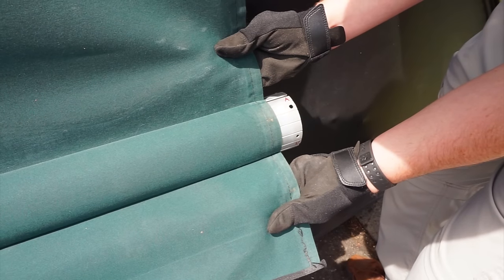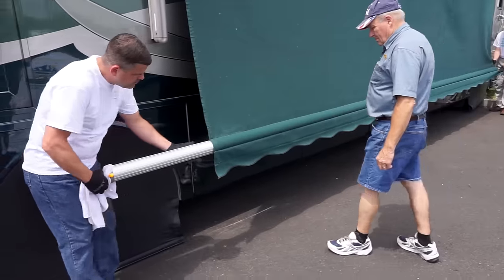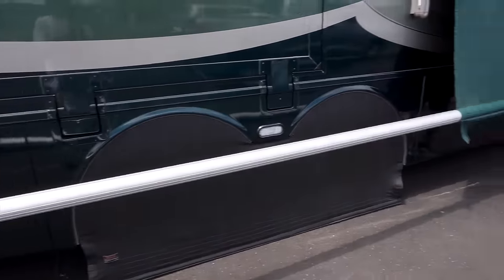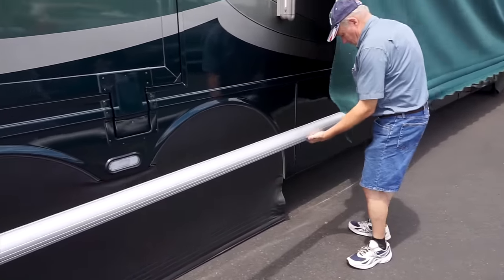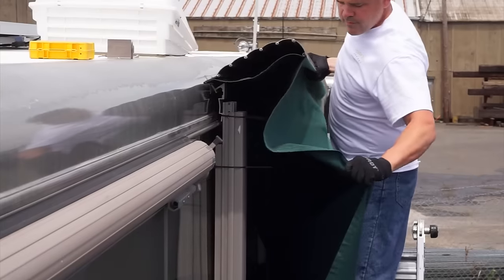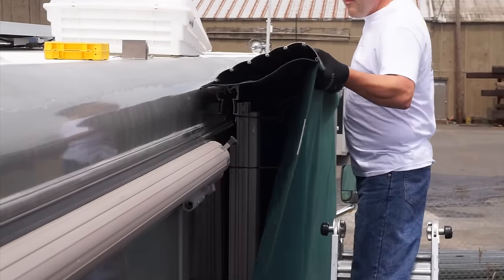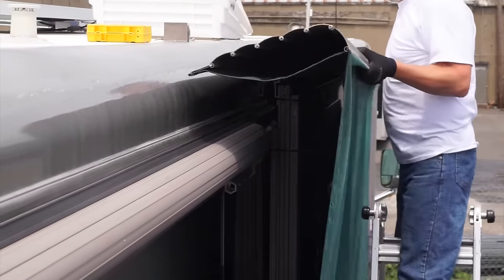With a helper holding the fabric at the front of the RV, pull the roller out toward the rear. Now you can slide the entire awning and protective metal wrap right off the side of the RV.